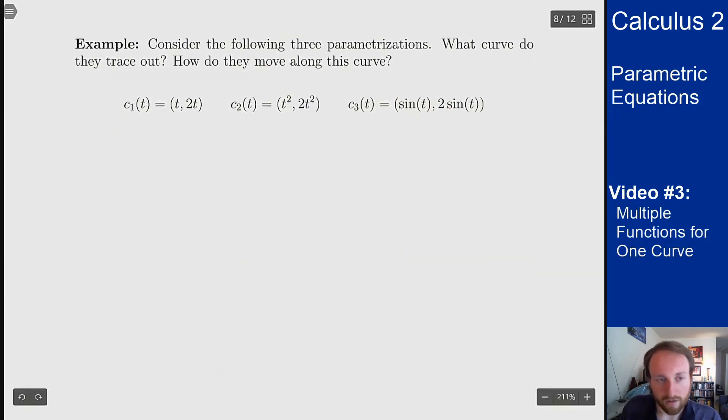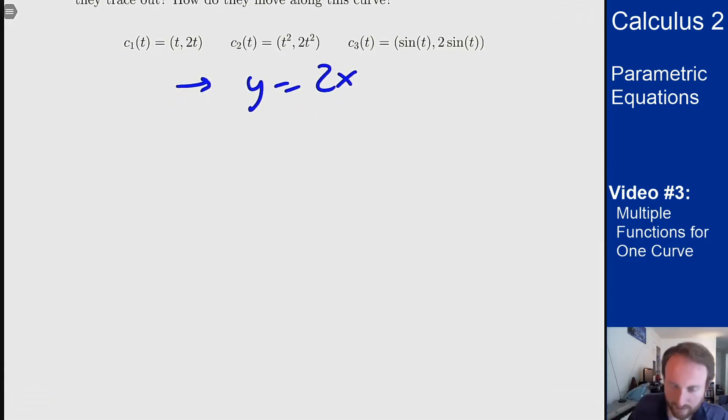Looking at all of these: c₁(t) = (t, 2t), c₂(t) = (t², 2t²), and c₃(t) = (sin t, 2 sin t). For all of these we see that y = 2x, which means all points lie on the line y = 2x. We'll draw out three versions and see where that gets us.